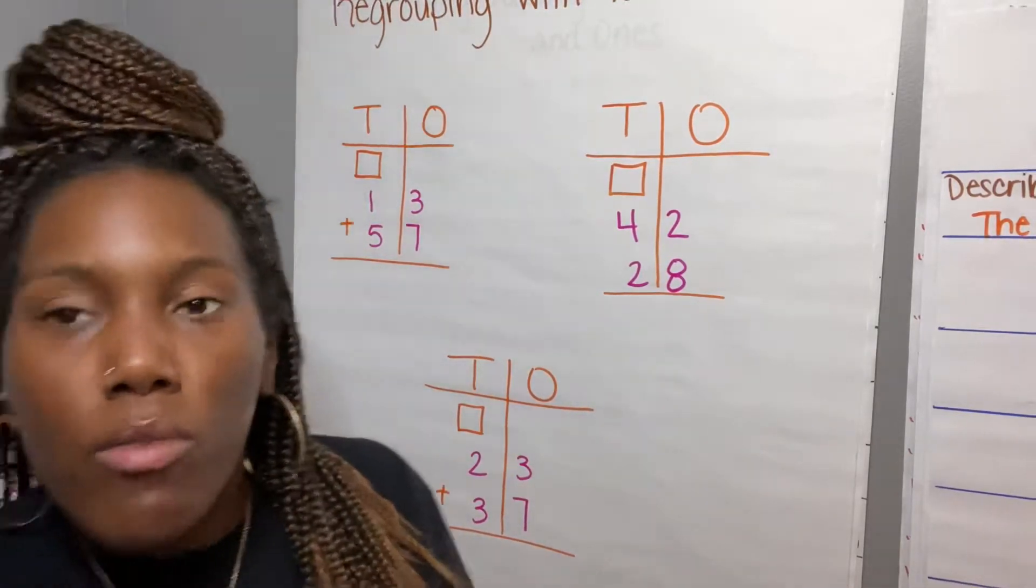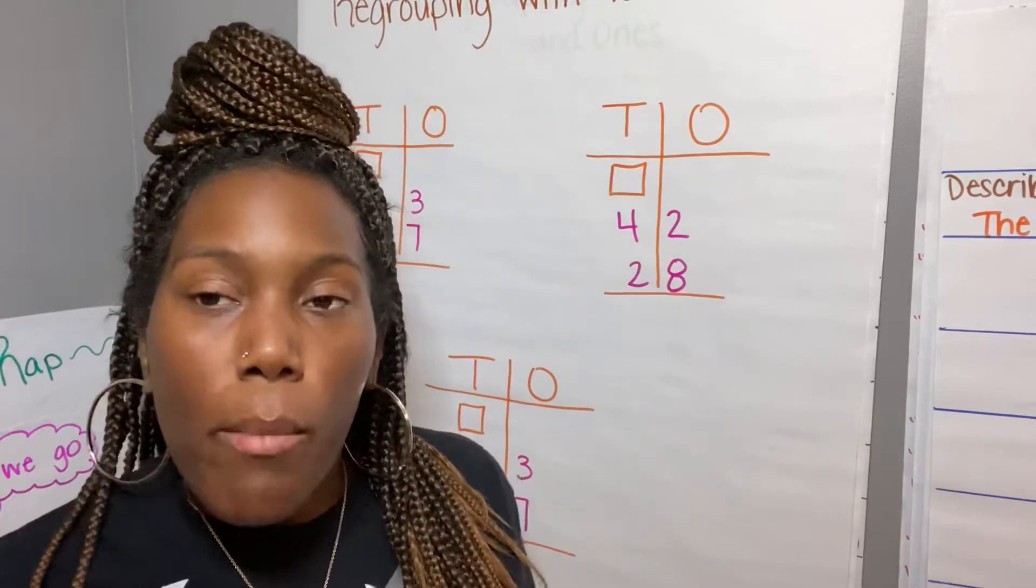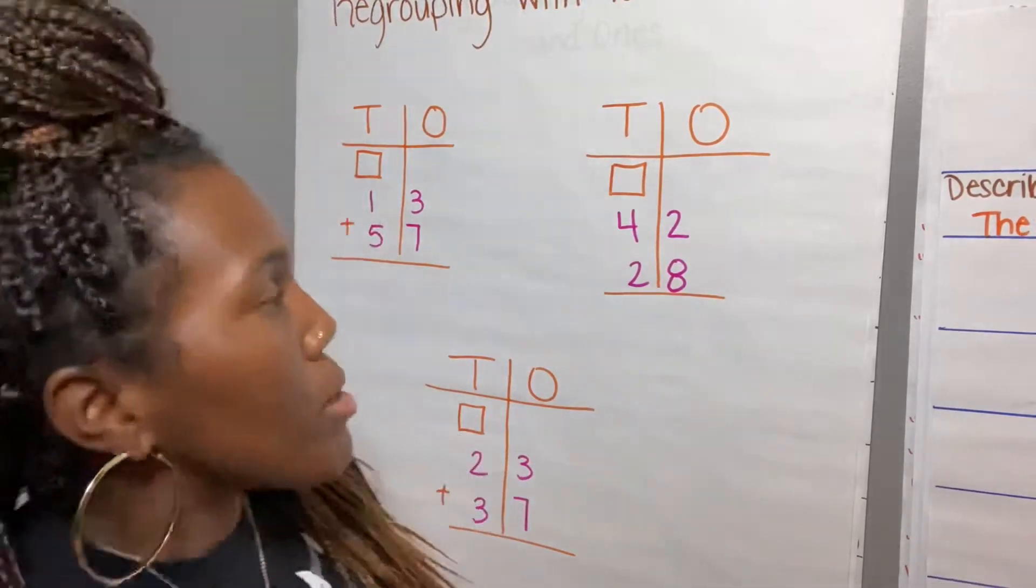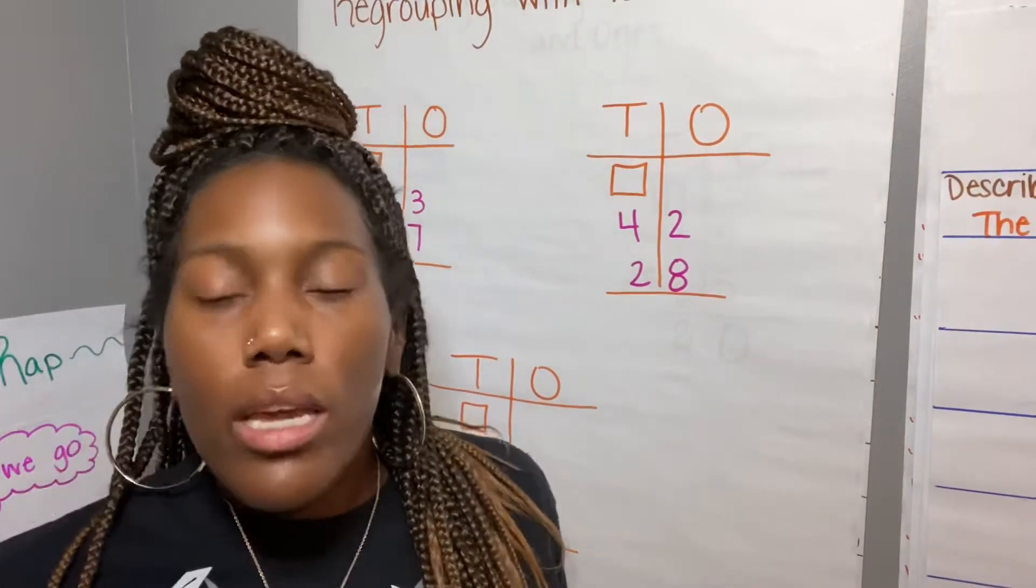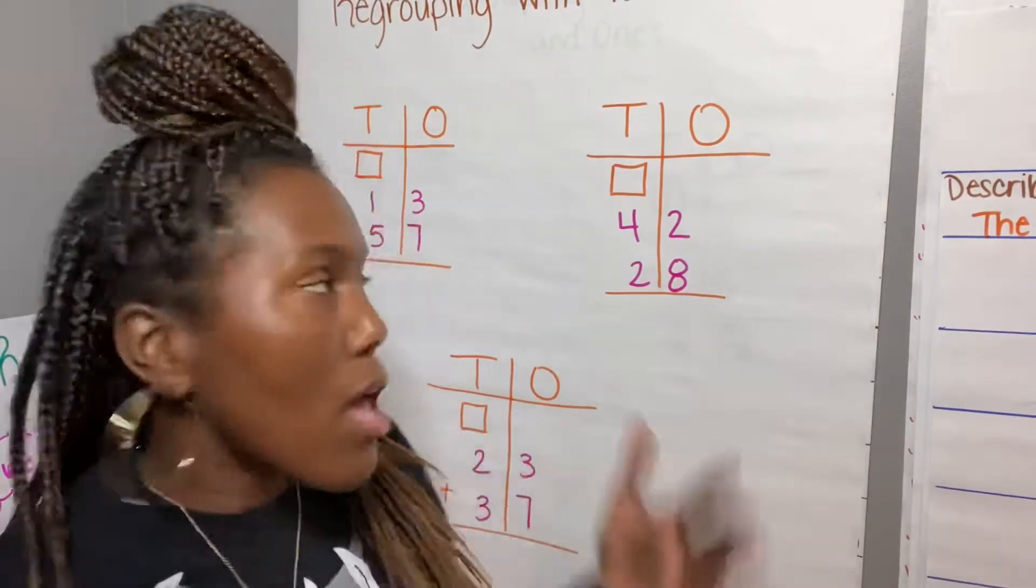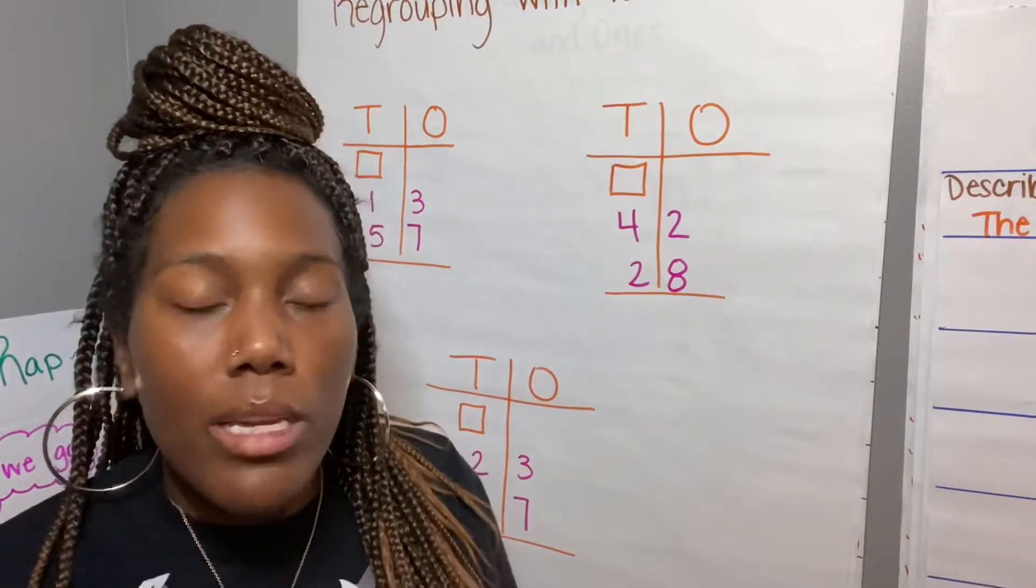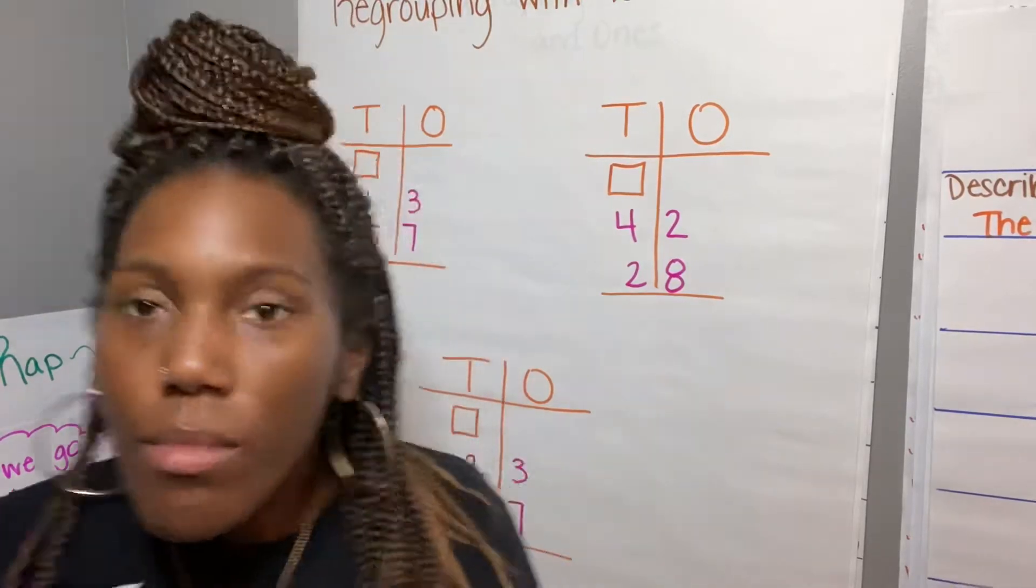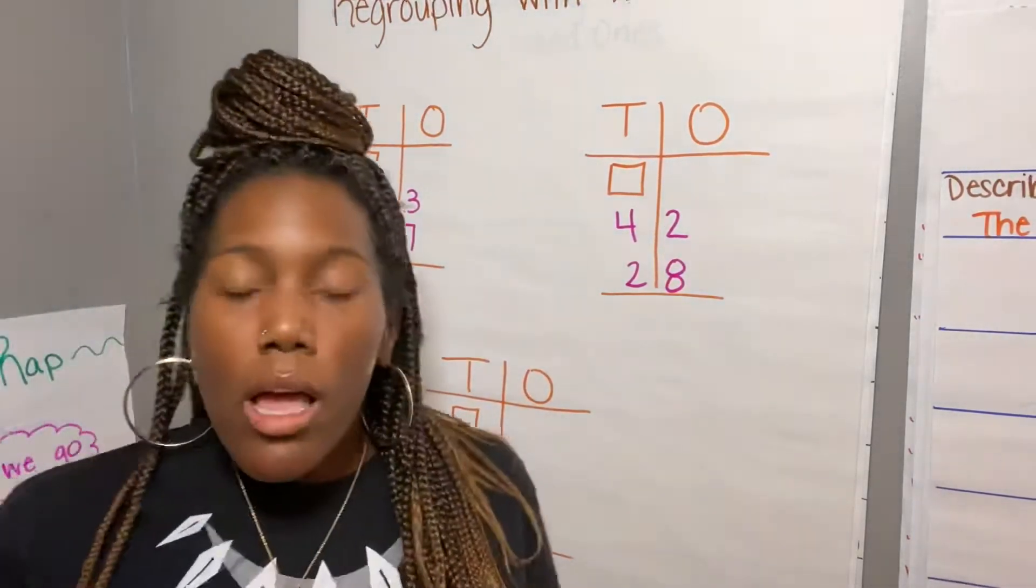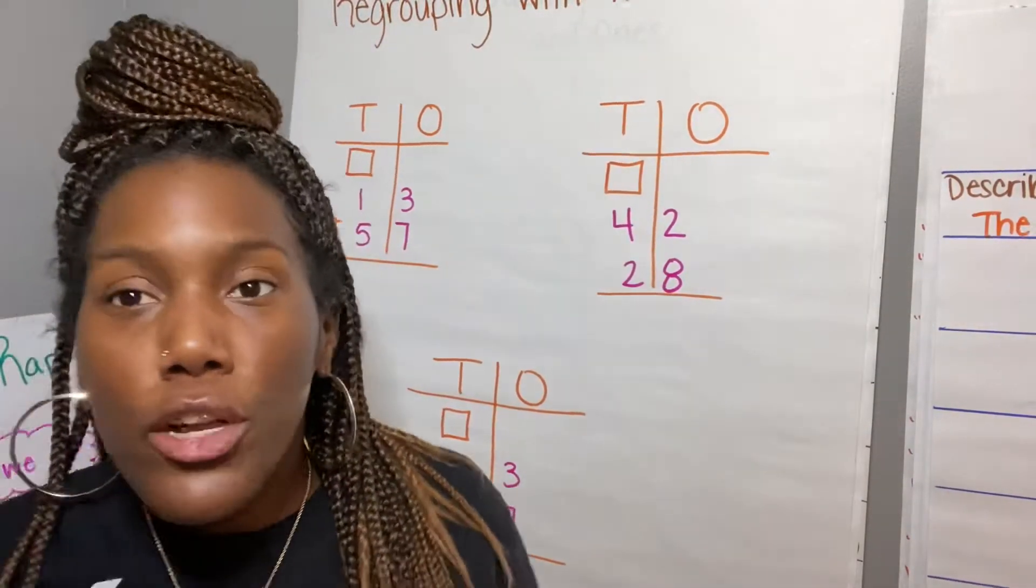Please make sure that you're always doing this file review, learning how to skip count by twos and by fives, and remembering how to use our place value chart. If you need any other help with this, your parents have my number and they know how to contact me. I'm always available to help you guys. Let's get started. Our first problem is 13 plus 57.